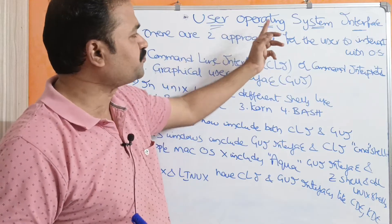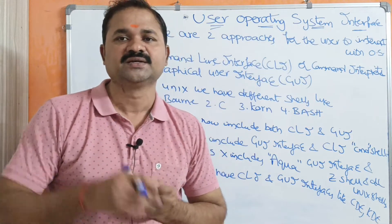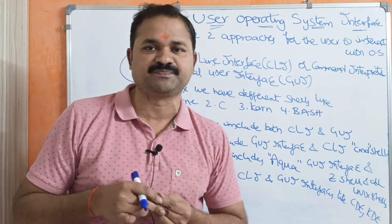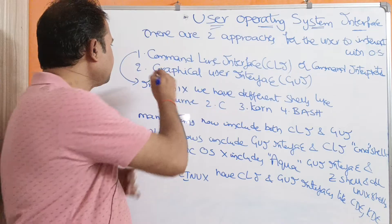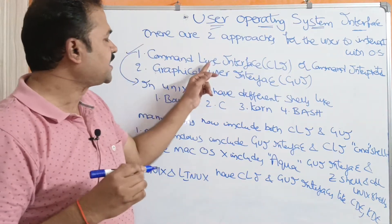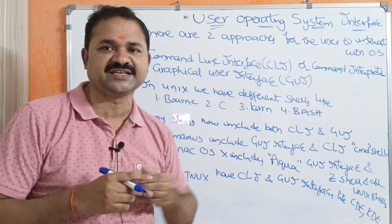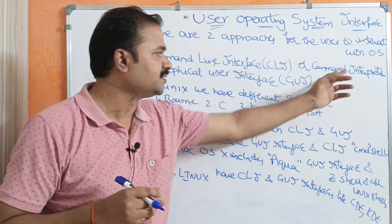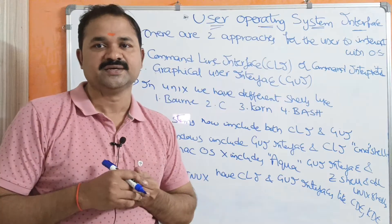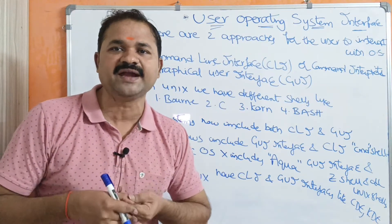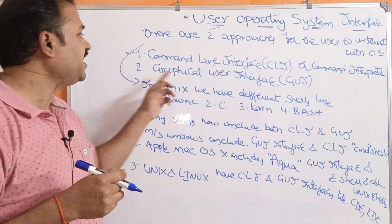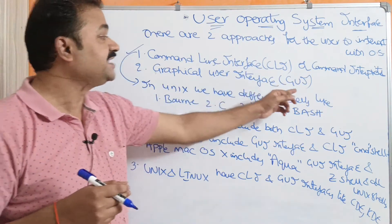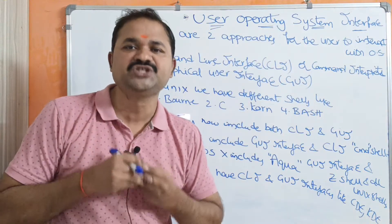The major use of the User Operating System Interface is that a user can interact with the operating system with the help of two approaches. The first approach is Command Line Interface, in short CLI or Command Interpreter. The second approach is Graphical User Interface, in short GUI.